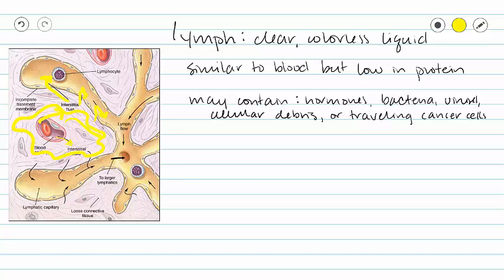This interstitial fluid in between the spaces of our cells is going to be forced into our lymphatic capillaries. These capillaries have larger holes than our blood capillaries and so they can let in whole cells into our lymph. Our lymph may contain things like hormones, bacteria, other pathogens, cellular debris from old dead or dying cells, traveling lymphocytes, and even traveling cancer cells. So lymph is derived from our interstitial fluid and contains everything that our interstitial fluid might contain, including electrolytes and good cell products.